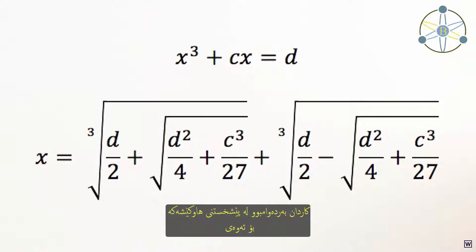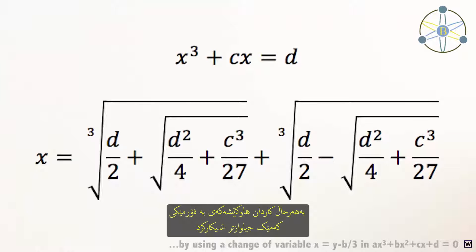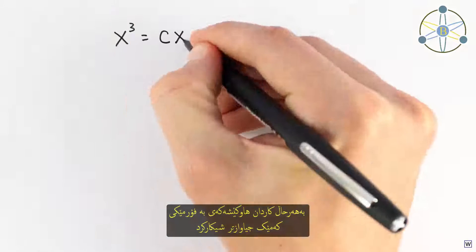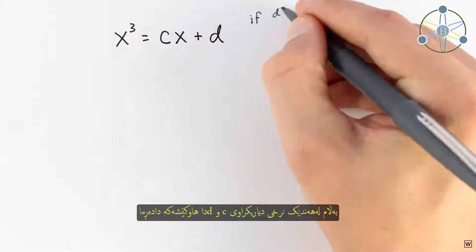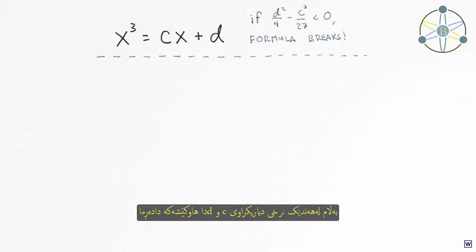Cardan went on to improve his borrowed formula, even making it work for cubics that included an x squared term. However, along the way Cardan came across a problem. In a slightly different version of the equation, written as x cubed equals cx plus d, under certain values of c and d the formula would break.